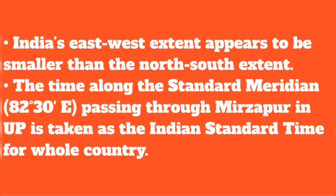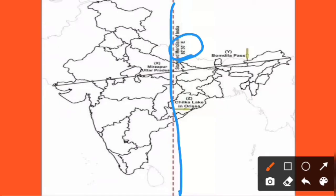The east-to-west and north-to-south extensions are quite large. The standard meridian of India is 82 degrees 30 minutes east, which passes through Mirzapur in Uttar Pradesh. Here you can see — this is the standard meridian of India at 82 degrees 30 minutes east, passing through Mirzapur city.